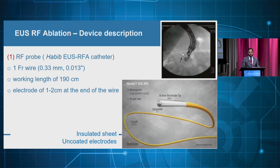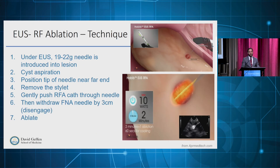There are a few devices available for EOS-guided RFA. The first is an EOS-RFA catheter that is very thin — one French in diameter. It has an insulated sheath and comes with 1 to 2 centimeter uncoated electrodes at the tip, which is the effective part. This catheter is used through FNA needles.